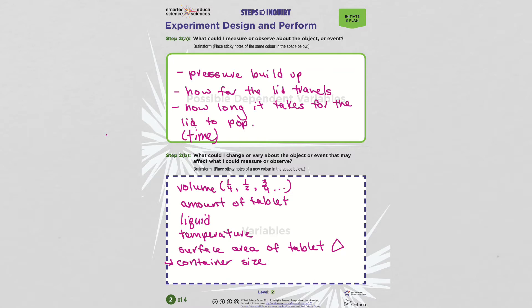So then we decided what could we measure or observe about the object or events. One person said we could measure the pressure buildup if we had a sensor. Some people said we could measure how far the lid travels. We could measure how far it lifted up in the air if you could kind of gauge how high it goes. You could also measure how far it went distance wise if you laid the container down and shot the lid off.